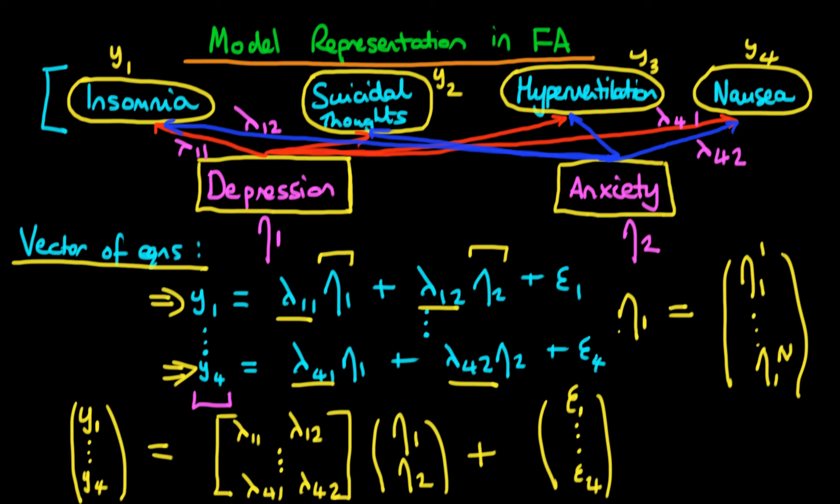So things to note about this. Essentially what we've done is we have stacked equations rather than observations here. And so that's just something to bear in mind. Essentially each of these individual things y1 through y4 really represent a vector of observations. But we kind of forget about that in the vector of equations formalism of factor analysis models.